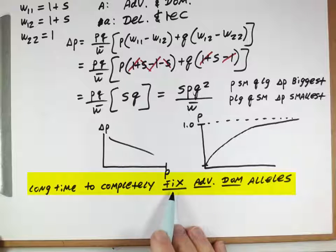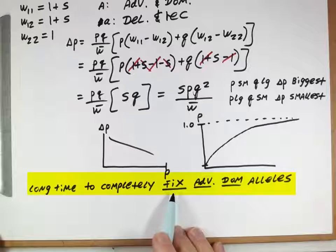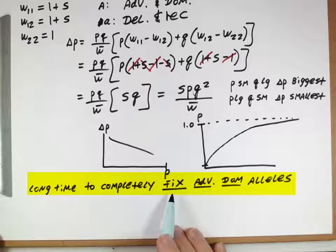And fix is our technical term for when a frequency goes to 1 or when an allele becomes the only allele we see, right, the new wild type.